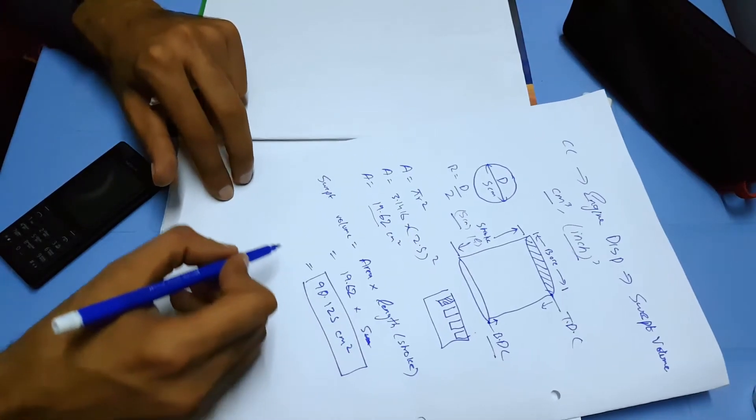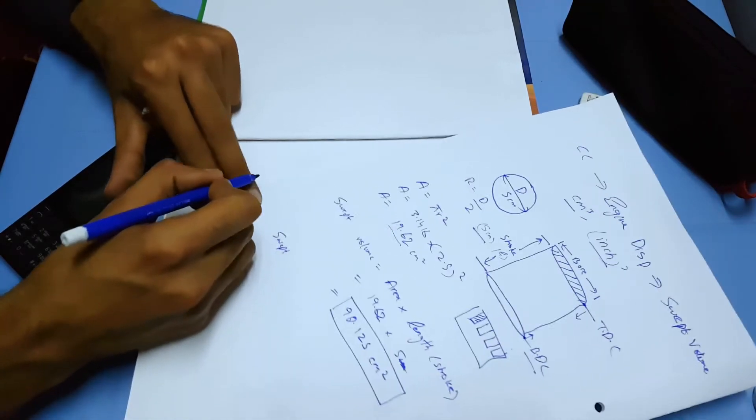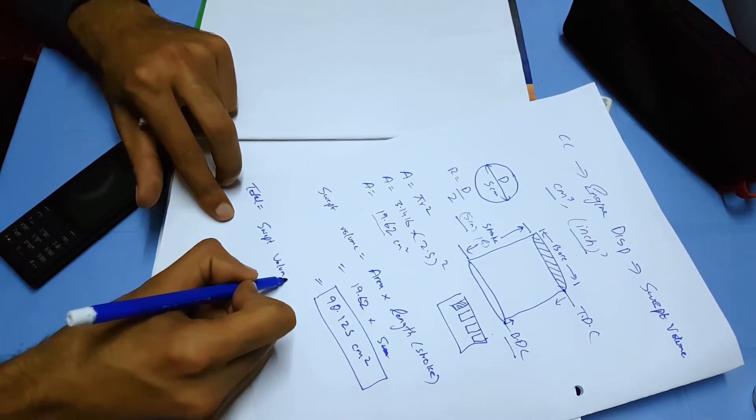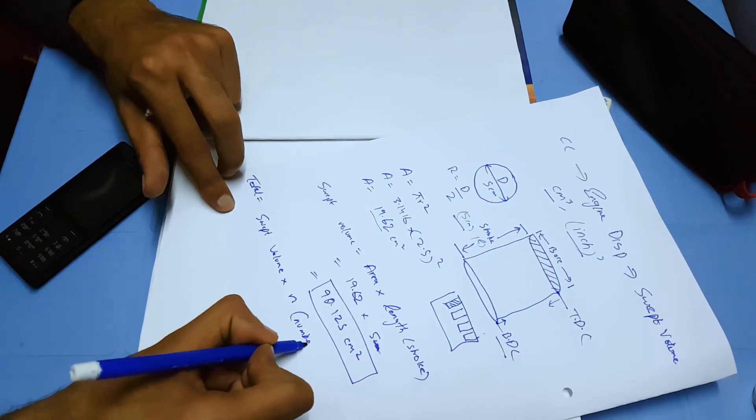multiply this swept volume. Total volume equals swept volume of one cylinder multiplied by n, where n is the number of total cylinders in your engine.